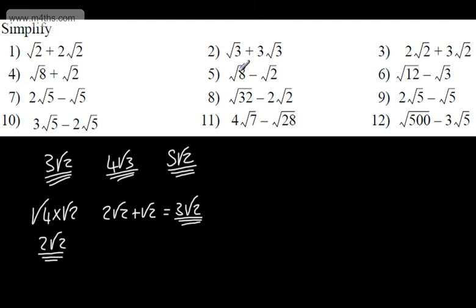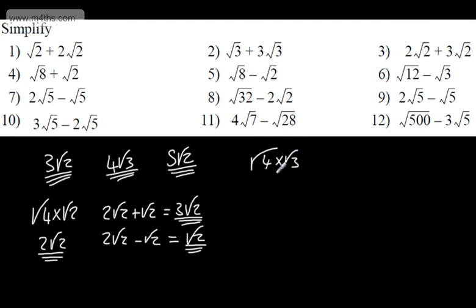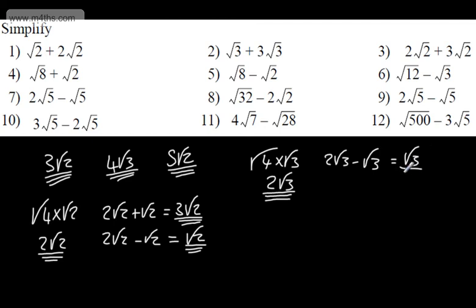For root 8 minus root 2, we're doing exactly the same but subtracting, giving 1 lot of root 2. For root 12 minus root 3, root 12 can be simplified: root 4 multiplied by root 3 gives 2 root 3. So this leads to 2 root 3 minus 1 lot of root 3, which is just root 3. Then 2 root 5 minus root 5 gives us 1 root 5.